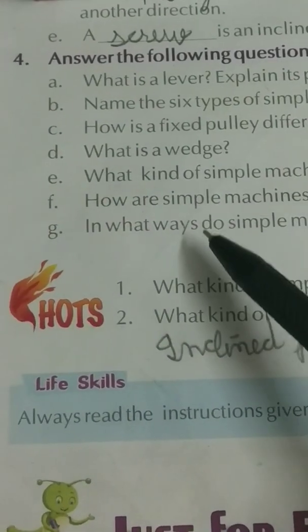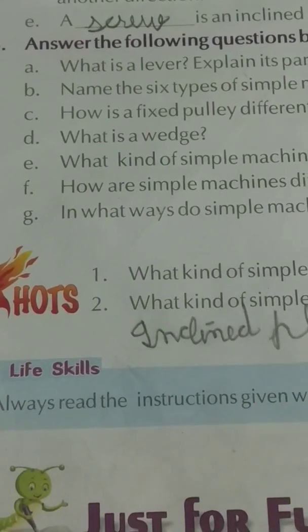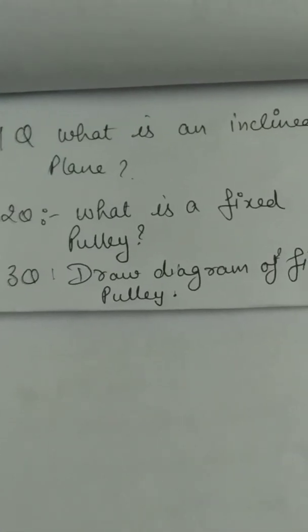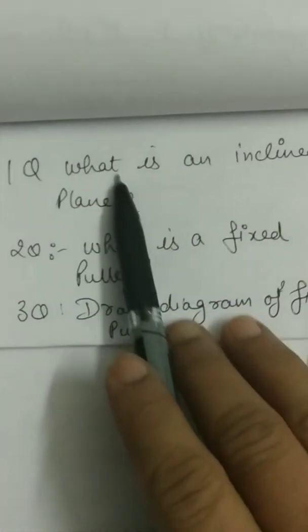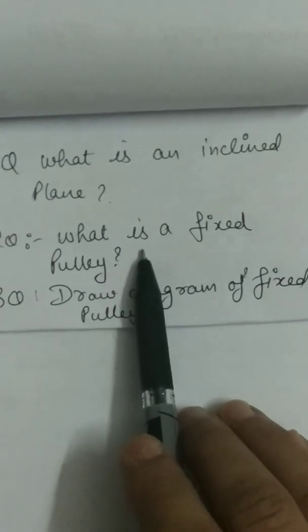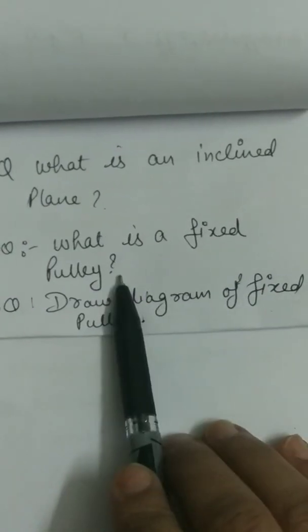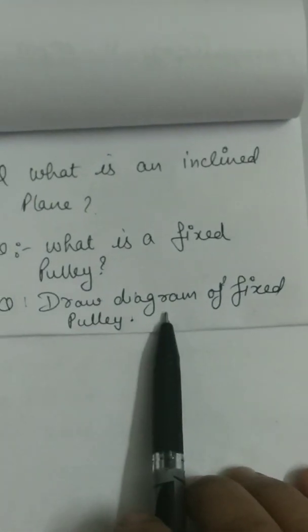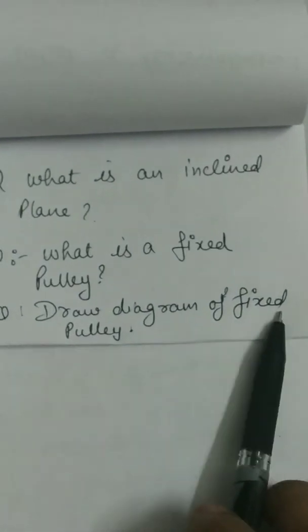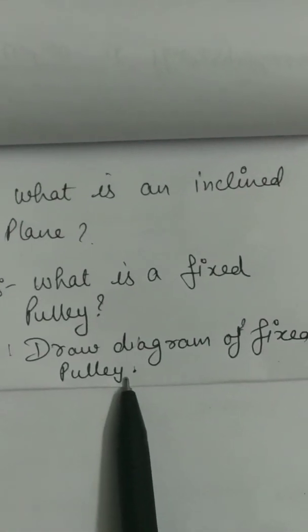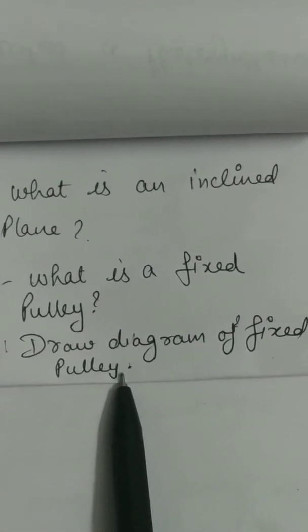Now note down some questions for practice: first, what is an inclined plane? Second, what is a fixed pulley? Third, draw a diagram of a fixed pulley. Revise this chapter. Thank you.